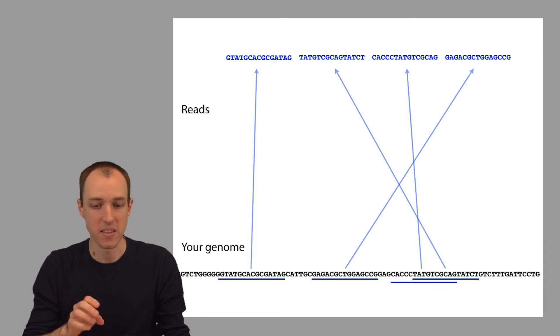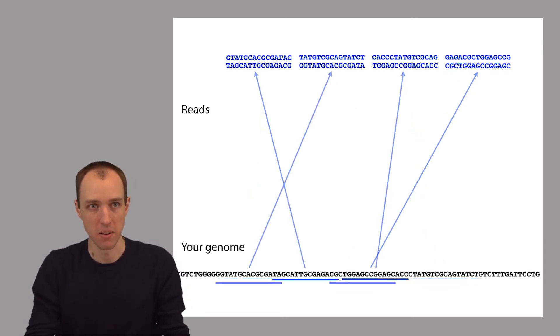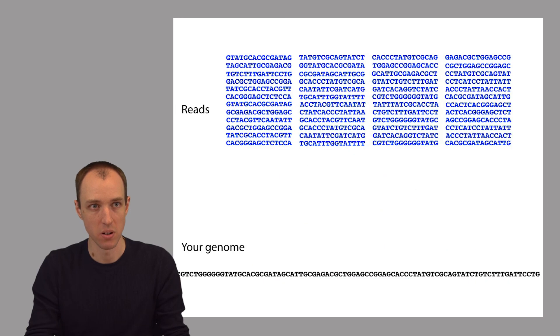And the DNA sequencer works by repeatedly reading off randomly selected substrings from the input DNA. Randomly selected snippets out from the middle of the input DNA. Many, many, many, many, many of them. So here are many of them. These snippets are called sequencing reads, or simply reads for short.